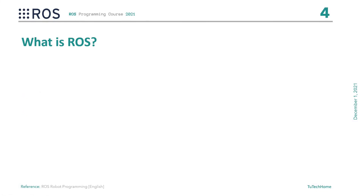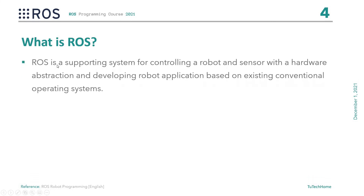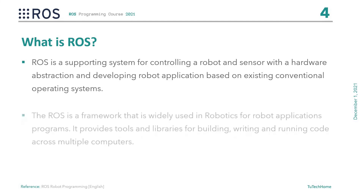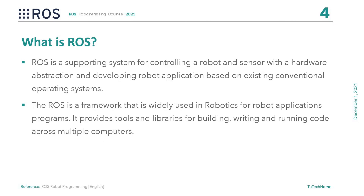Here are some definitions of ROS according to the author of the book ROS Robot Programming. ROS is a supporting system for controlling a robot and sensor with hardware abstraction, and developing robot applications based on existing conventional operating systems. Another definition is: ROS is a framework that is widely used in robotics for robot application programs. It provides tools and libraries for building, writing, and running code across multiple computers.